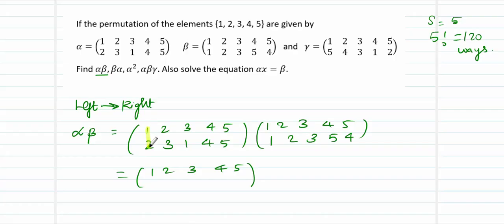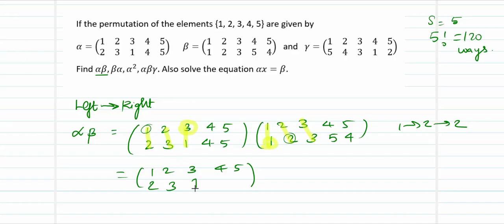Now: 1 maps to 2 in alpha, and 2 maps to 2 in beta, so 1 maps to 2. Next, 2 maps to 3 in alpha, and 3 maps to 3 in beta, so 2 maps to 3. Then 3 maps to 1 in alpha, and 1 maps to 1 in beta, so 3 maps to 1. Next, 4 maps to 4 in alpha, and 4 maps to 5 in beta, so 4 maps to 5. Finally, 5 maps to 5 in alpha, and 5 maps to 4 in beta, so 5 maps to 4. So alpha beta = (1, 2, 3, 4, 5) → (2, 3, 1, 5, 4).